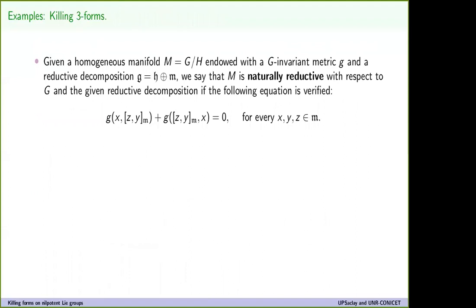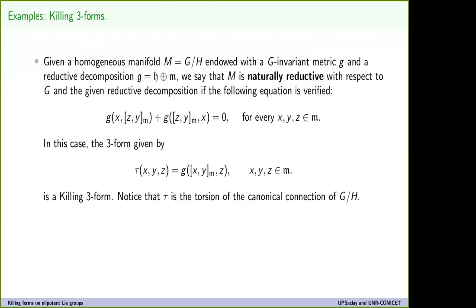Killing three-forms appear, for instance, in naturally reductive spaces. We know that if we have a homogeneous manifold endowed with a bi-invariant metric and we consider a reductive decomposition, then M is naturally reductive with respect to G and this decomposition if a certain equation is verified. In this case, the torsion of the canonical connection, given by the bracket projected to M, is the killing three-form. So killing three-forms appear naturally on naturally reductive spaces.